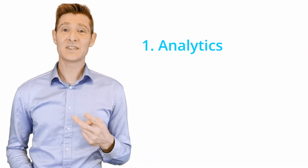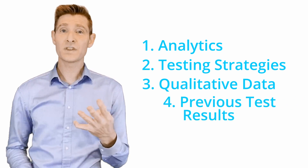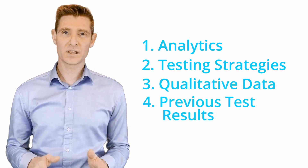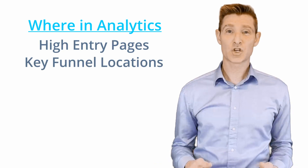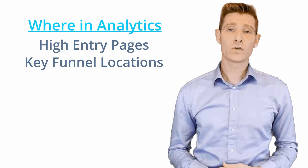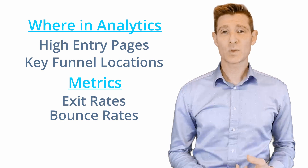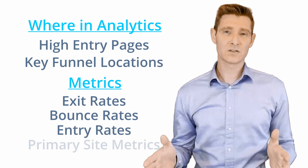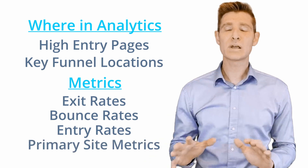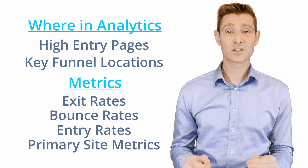First, analytics. When you're using analytics to come up with test ideas and knowing where and what to test, you have to look at your high entry rate pages and your key points in the process. You want to look at metrics like landing pages — which have high exit rates or high bounce rates, and which get the most visits. You also look at key places in the funnel, like checkout or your conversion funnel, and key places where people are signing up or doing something important for the site.